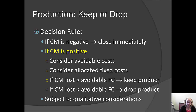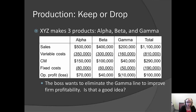The easiest way to look at this is through an example. This company makes three products: alpha, beta, and gamma. The boss has noticed that gamma is not doing very well — in fact, it's operating at a loss. The boss believes that eliminating gamma would improve the firm's overall profitability. Is the boss right? We need to do a little analysis to find out.